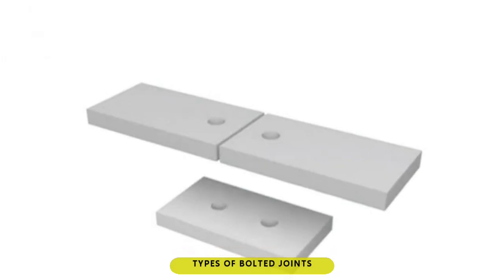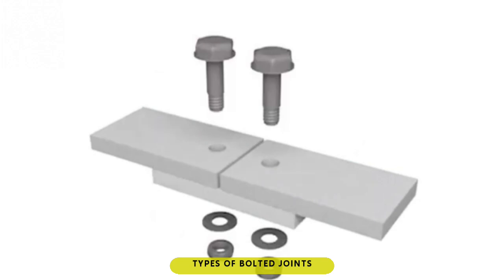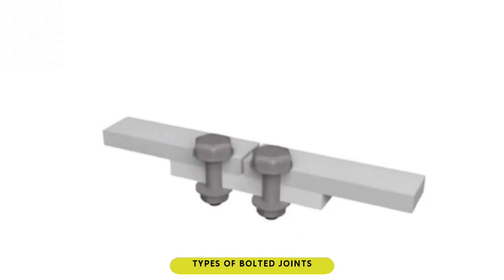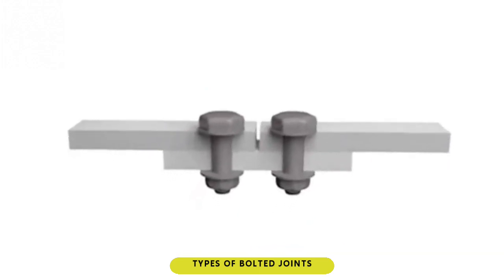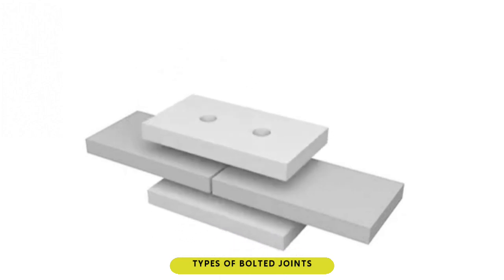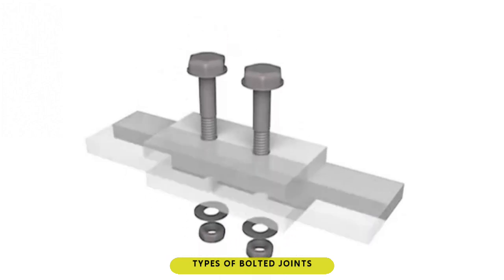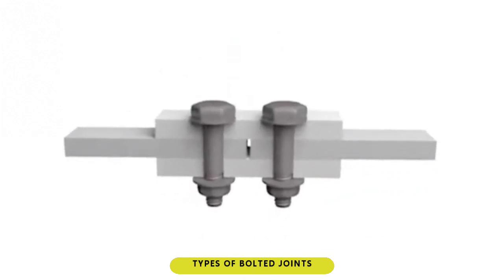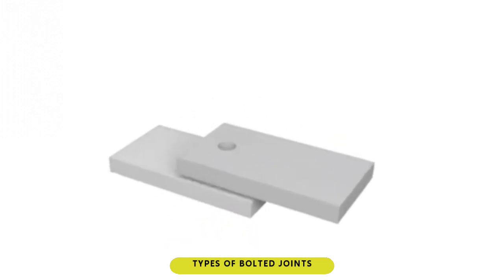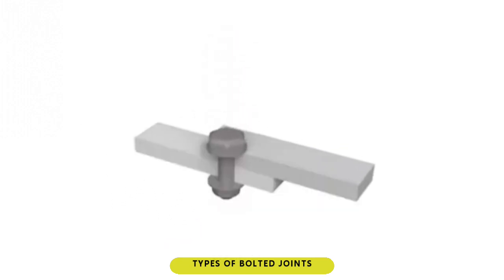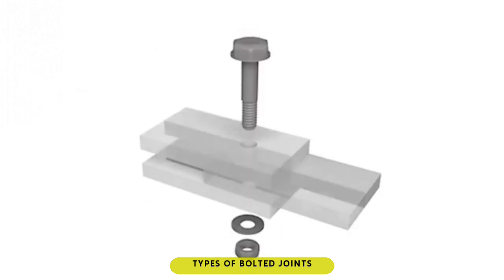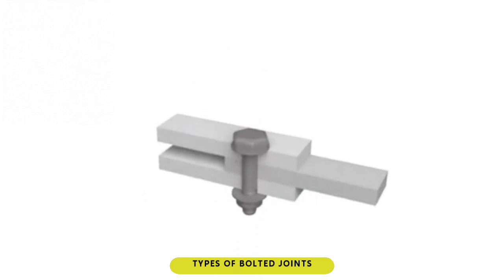Types of bolted joints. 1. Single cover butt joint: a butt-end connection of two pieces of metal by means of attaching a single piece of metal on one side that overlaps at the ends of both metals being joined. 2. Double cover butt joint: a butt-end connection of two pieces of metal by means of attaching two pieces of metal on both sides that overlaps at the ends of both metals being joined. 3. Single-lap joint: a lapping of two pieces of metal, then bolted. 4. Double-lap joint: a lapping of two parallel metals on a single piece of metal inserted on its middle, and then bolted.